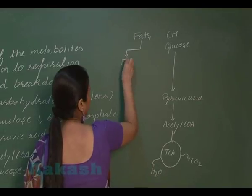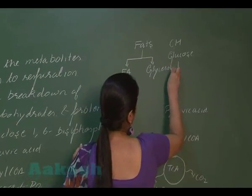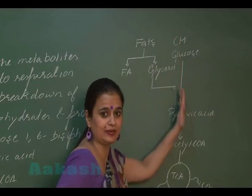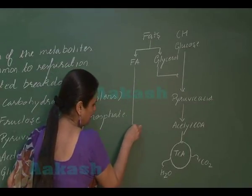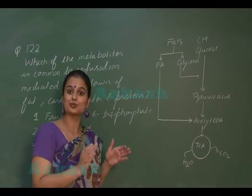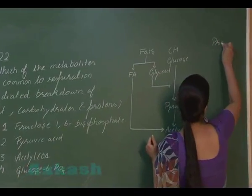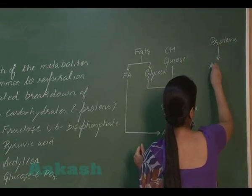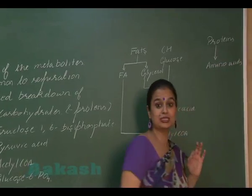Now for fats: fats undergo breakdown resulting in the formation of fatty acids and glycerol. Glycerol enters the respiratory pathway at the glycolysis step. Fatty acids undergo beta oxidation and are converted into acetyl coenzyme A.